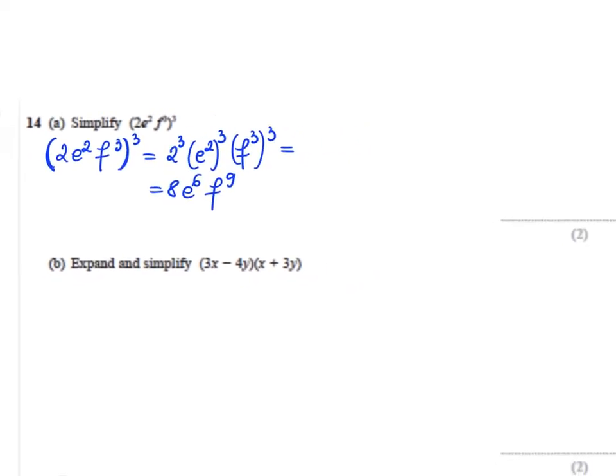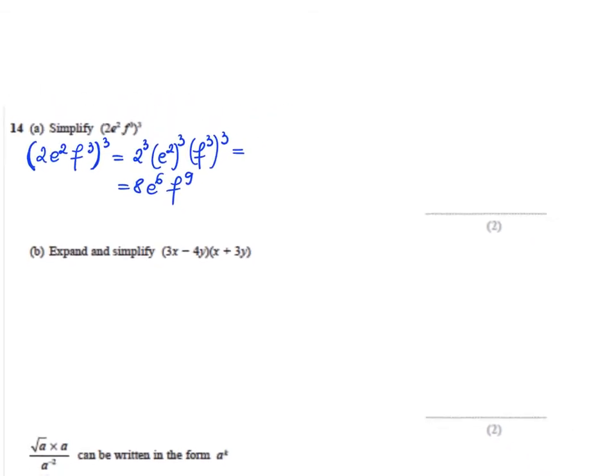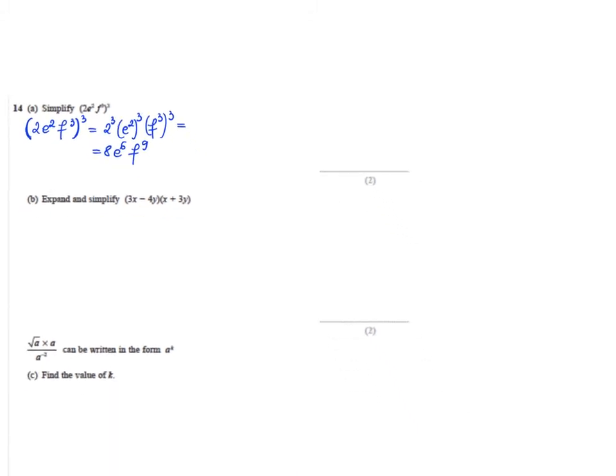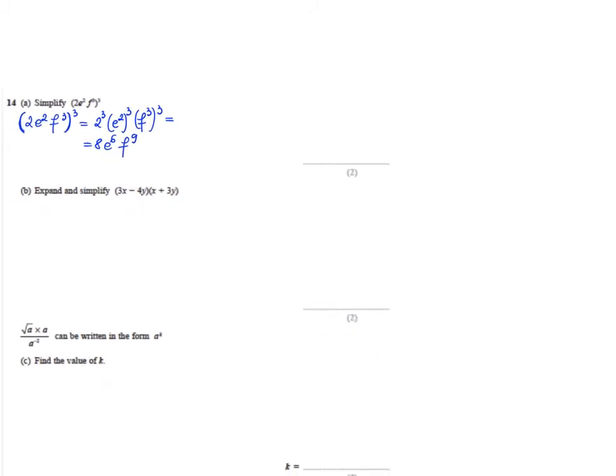I recommend whenever you see a question on indices, write the rules so that you see them in front of you. You'll need to learn them by heart in the same order all the time. My first rule is x^a times x^b equals x^(a+b).